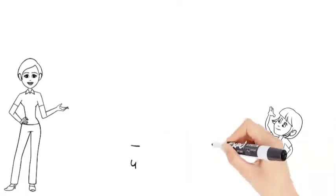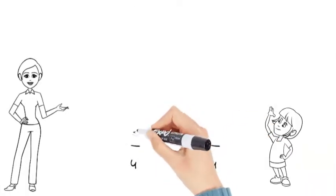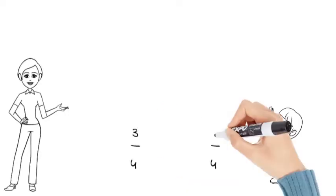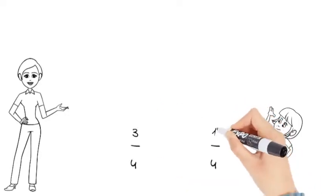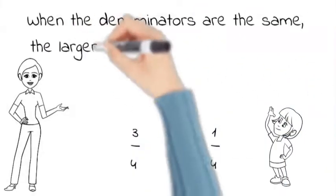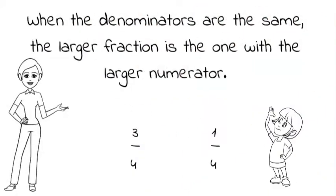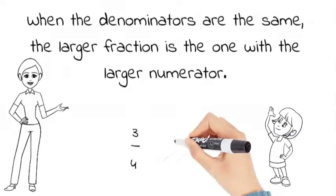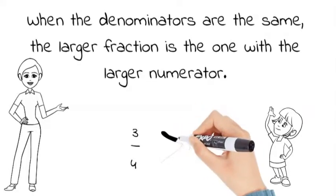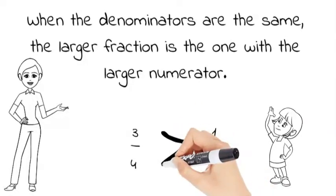So we're comparing the fractions three-fourths and one-fourth. Remember, when the denominators are the same, the larger fraction is the one with the larger numerator. So which fraction is greater? Three is bigger than one, so three-fourths must be greater than one-fourth.